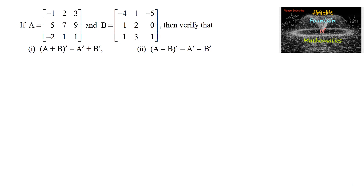Given matrix A is equal to [−1, 2, 3; 5, 7, 9; −2, 1, 1] and matrix B is equal to [−4, 1, −5; 1, 2, 0; 1, 3, 1]. We need to verify that (A+B) transpose equals A transpose plus B transpose, and (A−B) transpose equals A transpose minus B transpose. These are properties of the transpose of a matrix, and we shall verify them with an example.